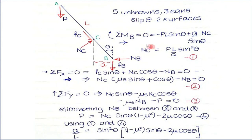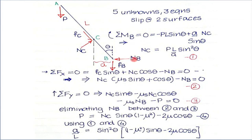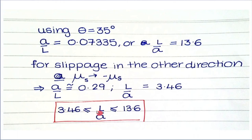With friction forces directed downward at both contacts — Fc = μNc and Fb = μNb — the only unknowns are A, Nb, and Nc. Solving the three equilibrium equations gives an expression in terms of μ, sin θ, and cos θ. With θ = 35° and μ = 0.2, we get A/L = 0.07335, or equivalently L/A = 13.6. This is the lower limit on A/L (upper limit on L/A).